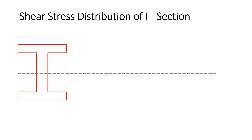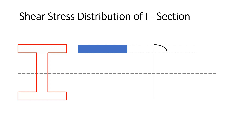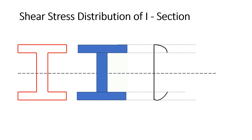Let's say we have an I-section and I want to draw the shear stress distribution. Consider the top flange first — the shear stress distribution for a rectangular section is parabolic. Similarly, the bottom flange also has a parabolic shear stress distribution, and the web also has a parabolic shear stress distribution above and below the neutral axis.